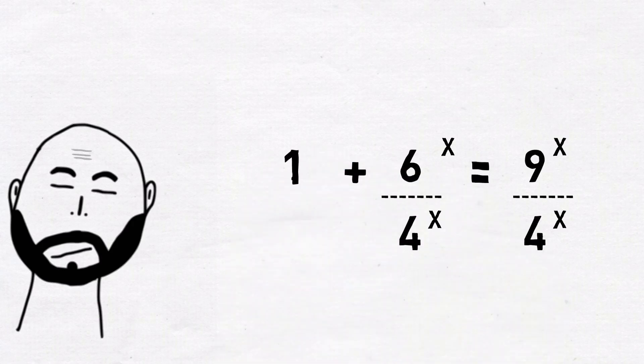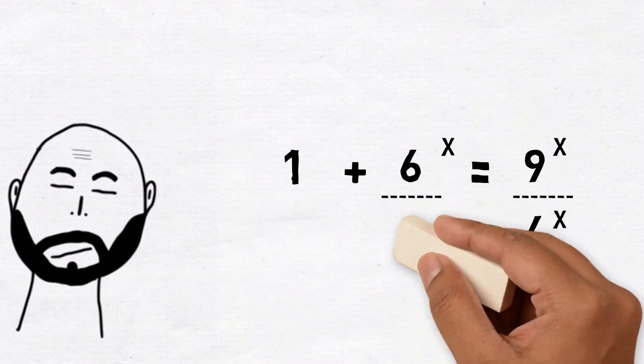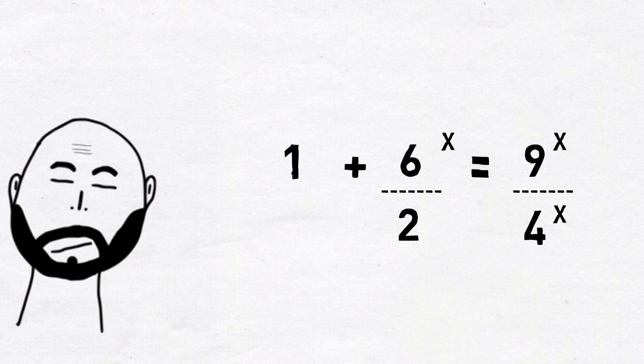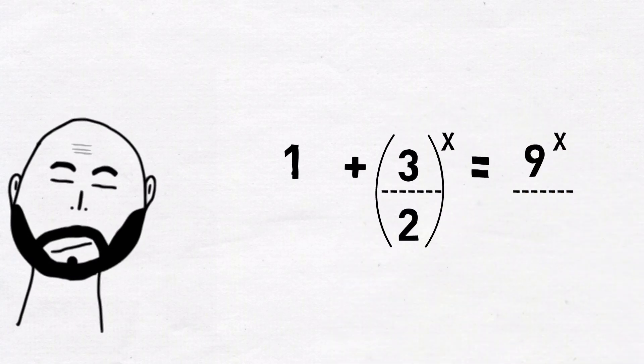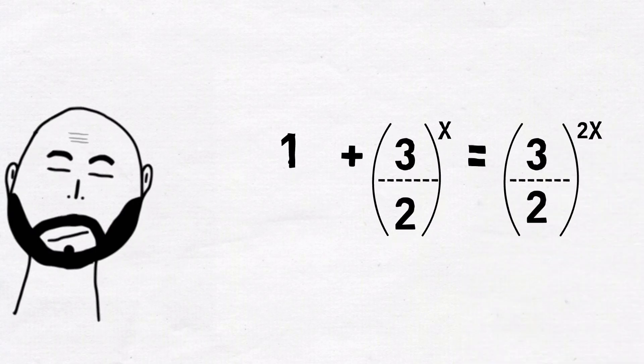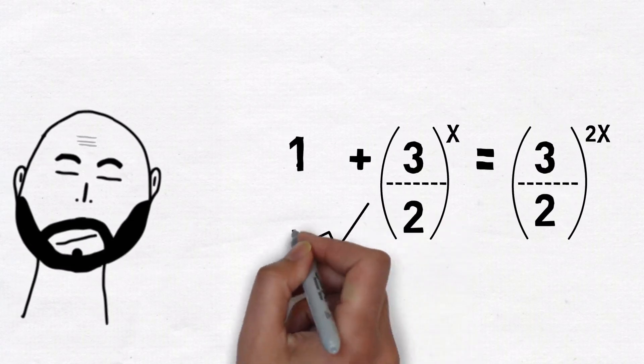This is what we get. Now this first term gives us 1. This second term can be written as 3 by 2 to the power x. And this third term can be written as 3 by 2 to the power 2x. Please make sure that this is clear. That is, how we got 2x.